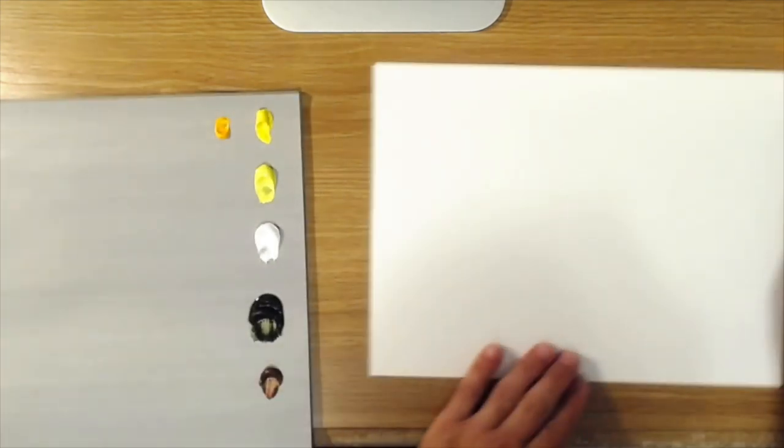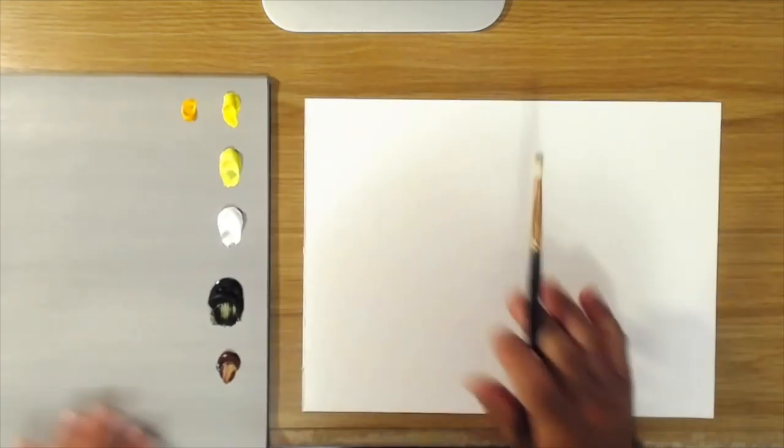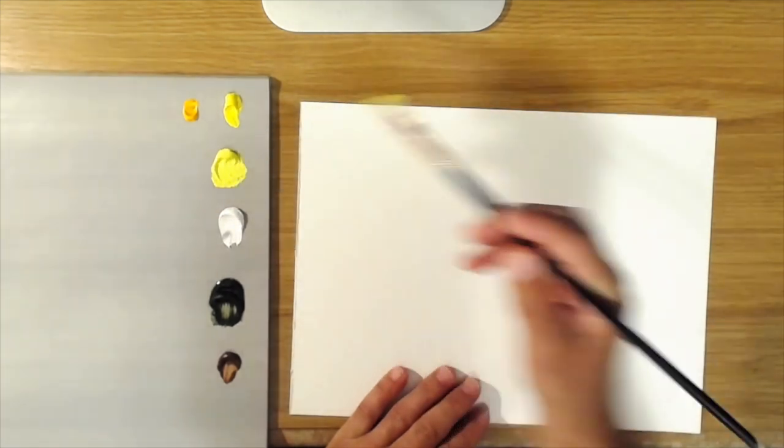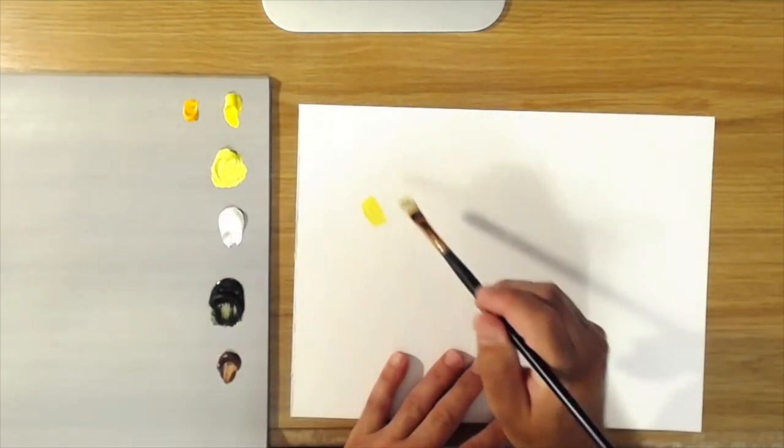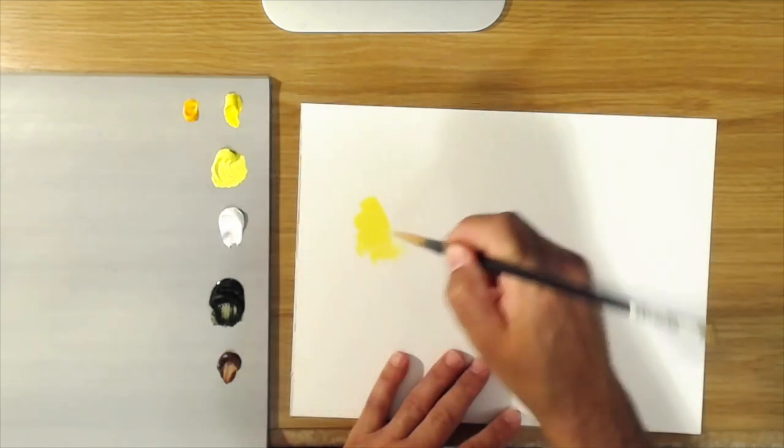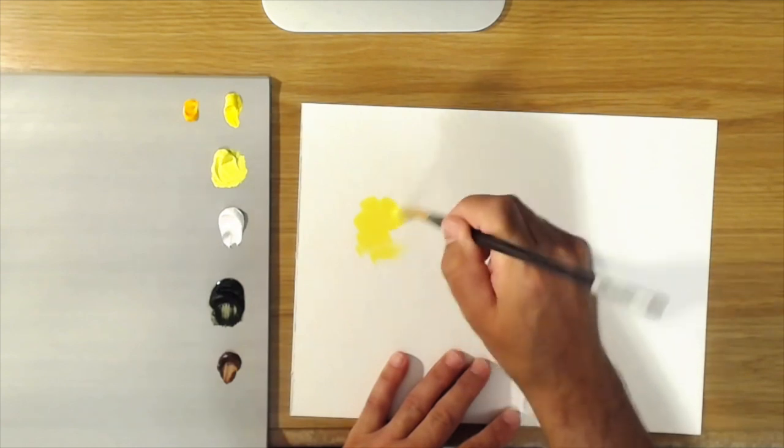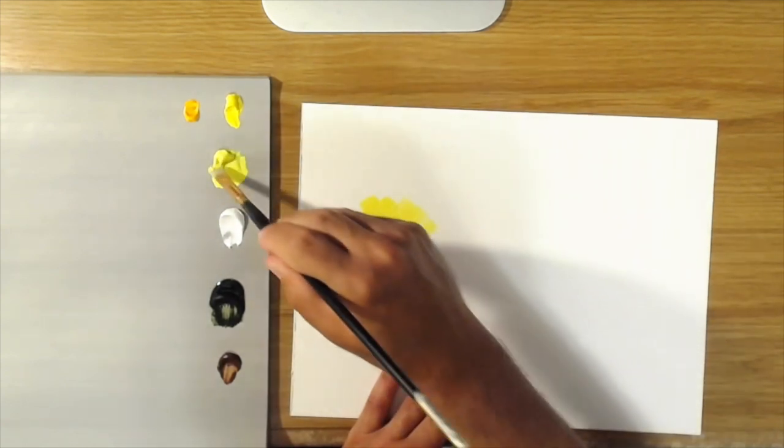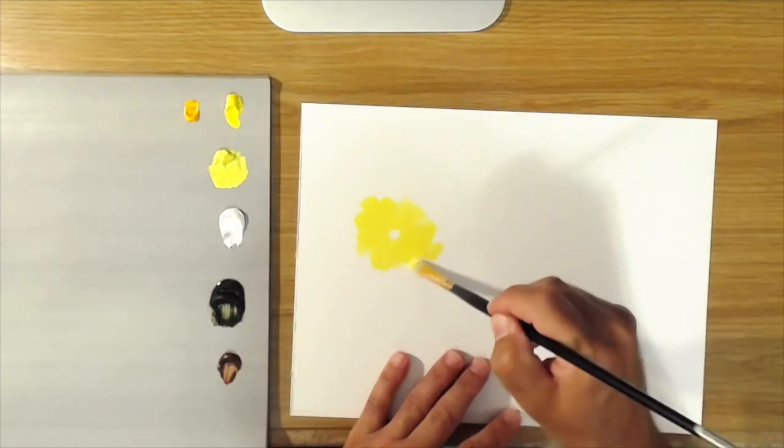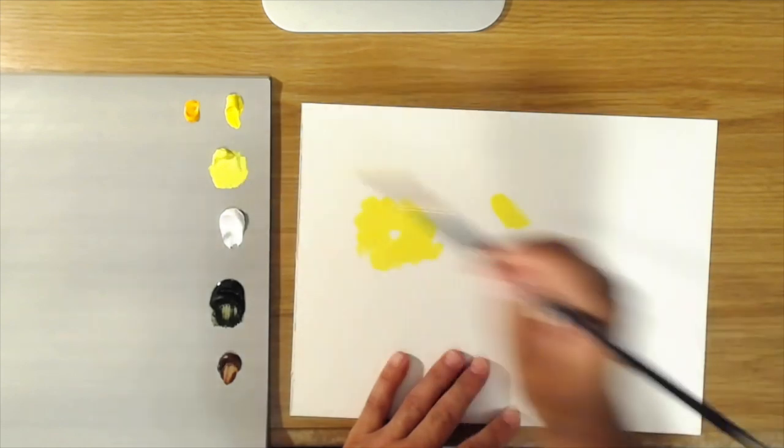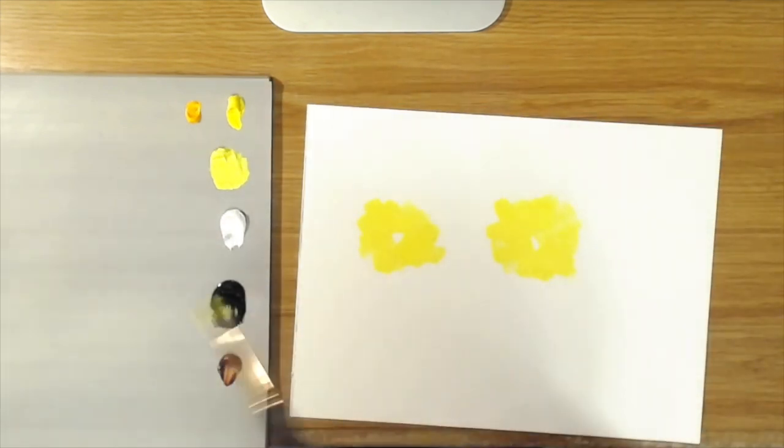So if I were to paint, let's say a flower with just the lemon yellow, and I'll just do a real quick demo here. I won't try to make this too finished or anything, but let's say you had two flowers that I painted like that.